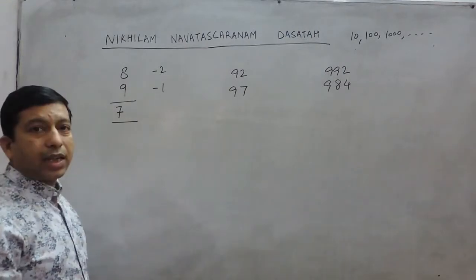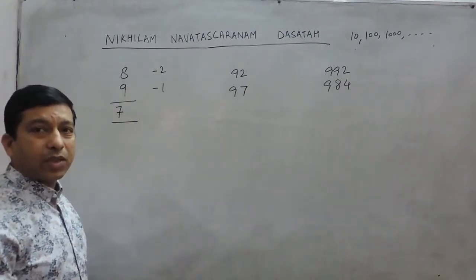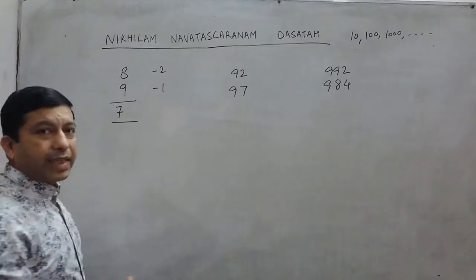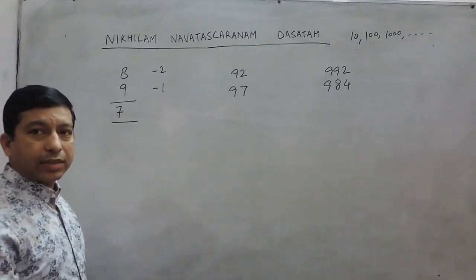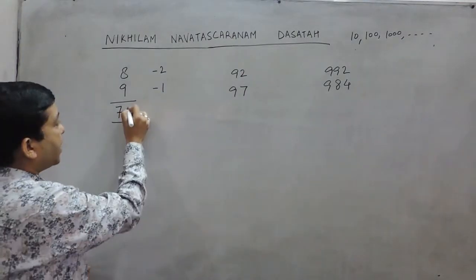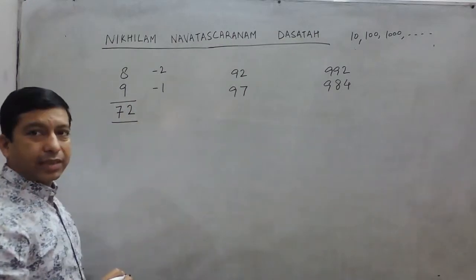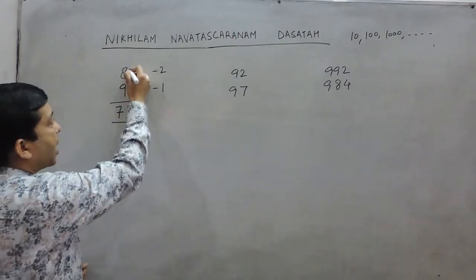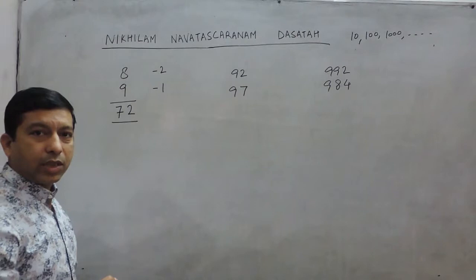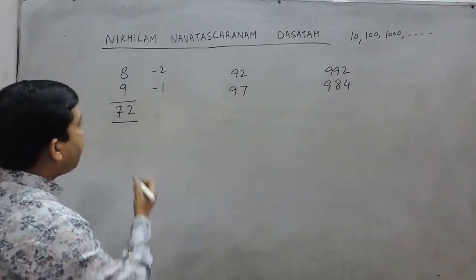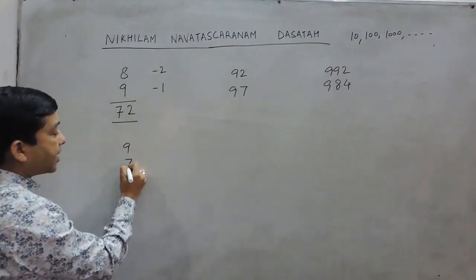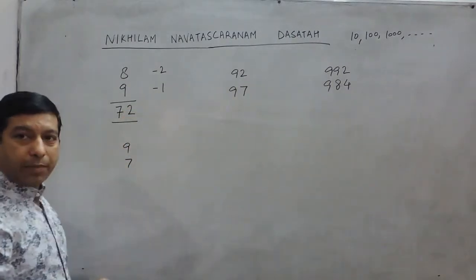This 7 is the tens place of the answer. If we multiply these two digits, 2 multiplied by 1 is 2, and this becomes the units digit. So the answer of 8 multiplied by 9 becomes 72.